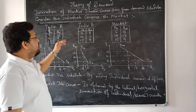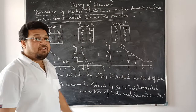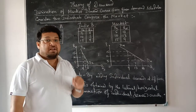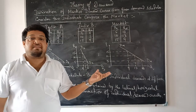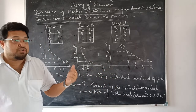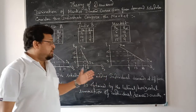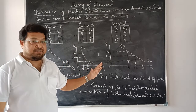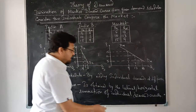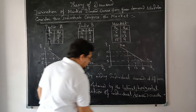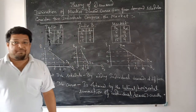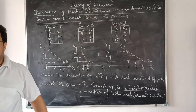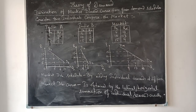This is the way you derive the market demand curve from given demand schedules, taking the simple assumption that there are only two individuals comprising the market. Please note it down carefully — there is lateral and horizontal summation. It is a very important keyword; don't miss it while writing. Thank you.